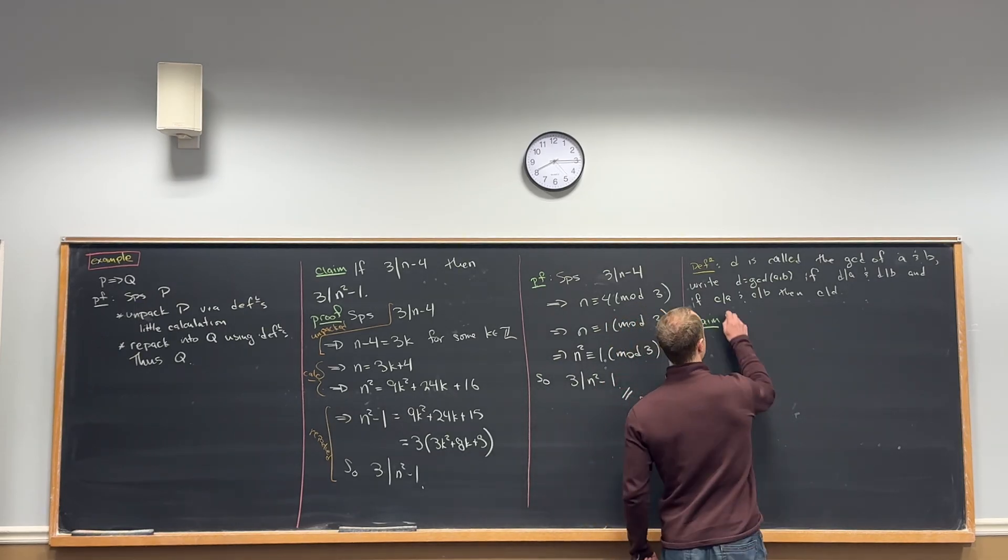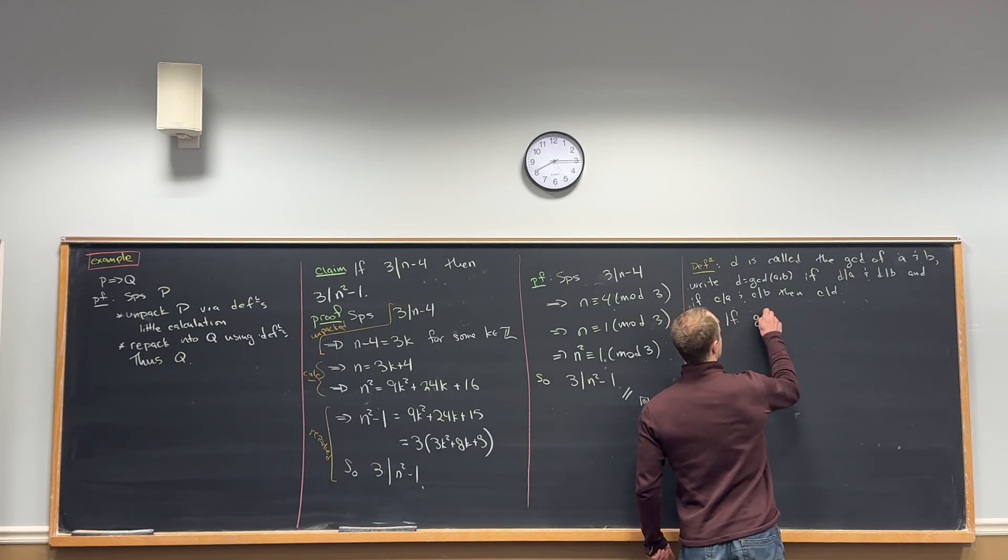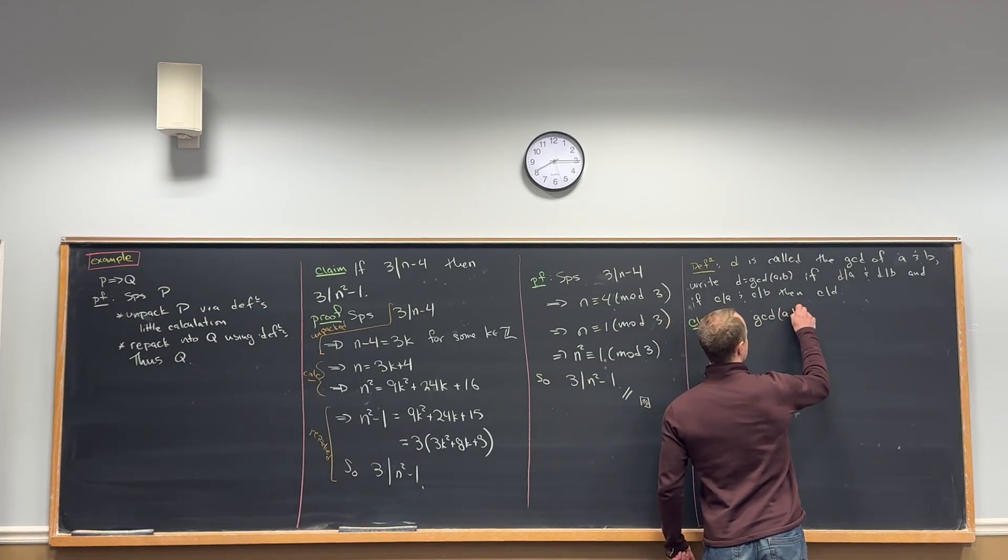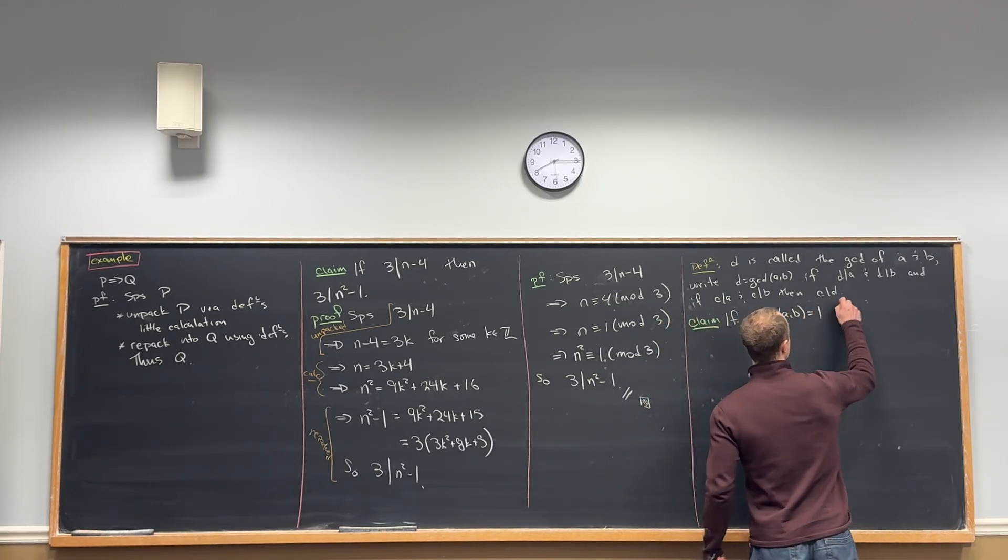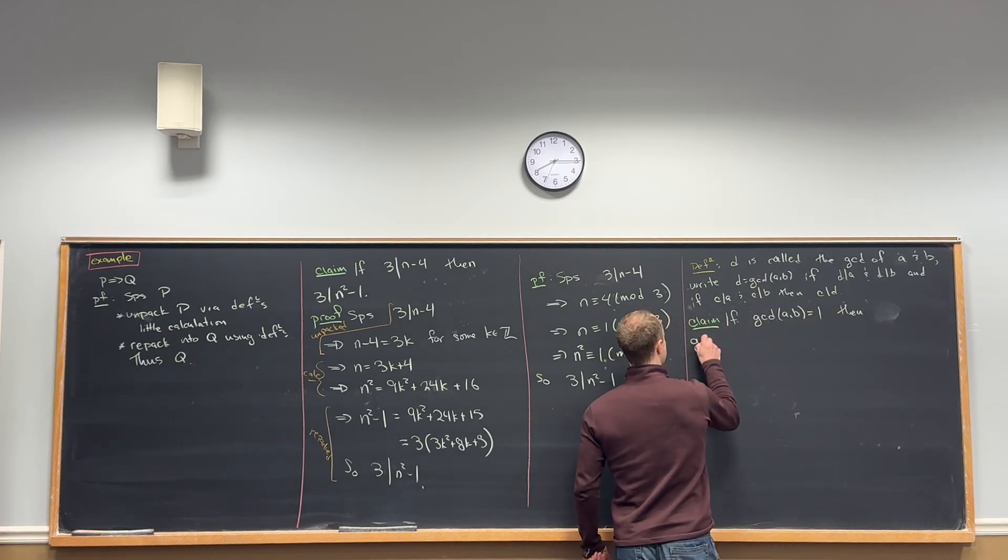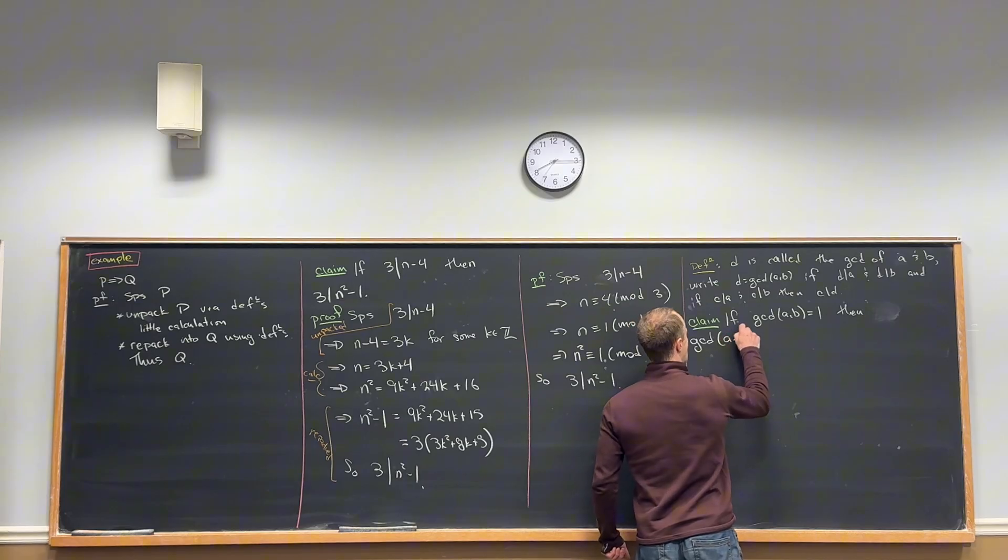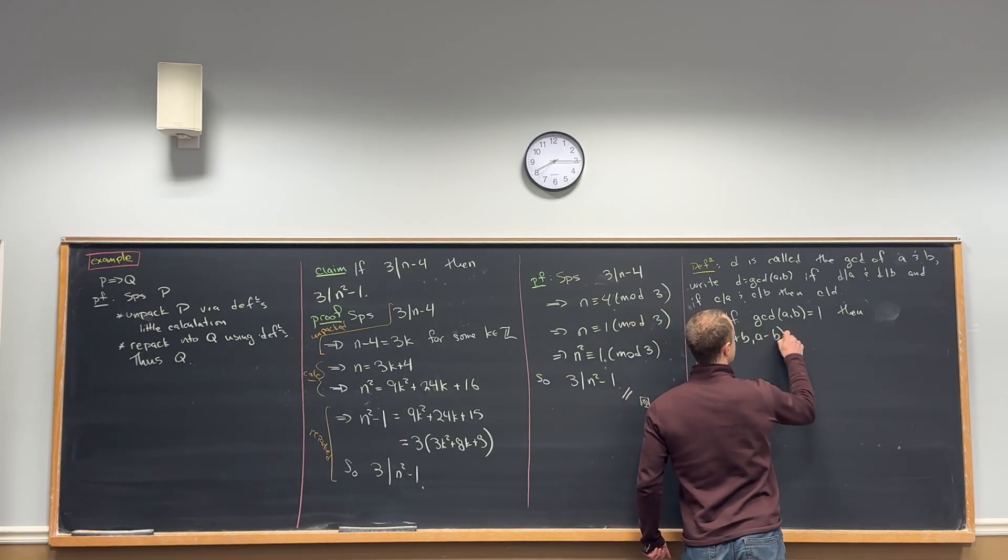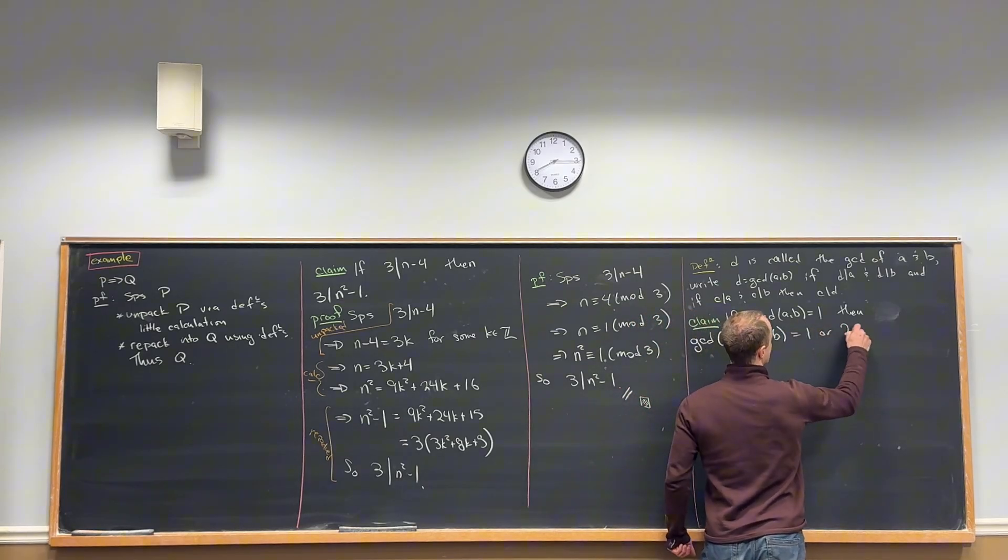And that is if the GCD of A and B is equal to 1, then the GCD of A plus B and A minus B equals 1 or 2.